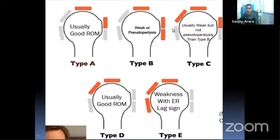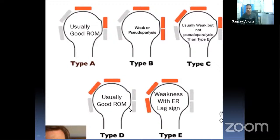Type B involves the full subscapularis — superior and inferior — plus the supraspinatus; patients usually present with shoulder weakness and pseudo-paralysis. Type C involves supraspinatus, infraspinatus, and superior subscapularis, presenting with weakness but not pseudo-paralysis. Type D involves supraspinatus and infraspinatus; patients have good range of motion with mild weakness. Type E involves supraspinatus, infraspinatus, and teres minor; patients have external rotation lag signs.